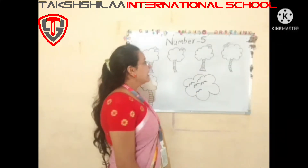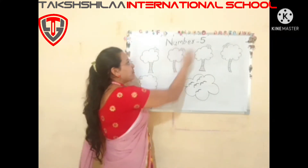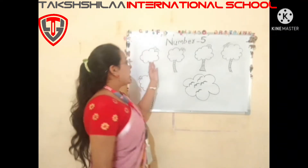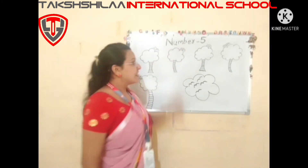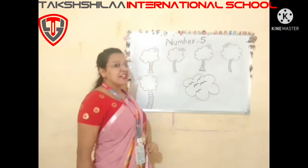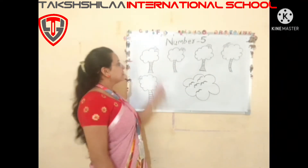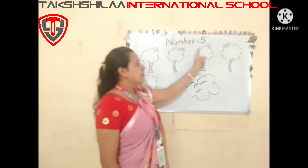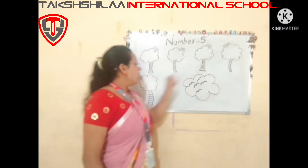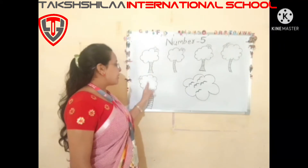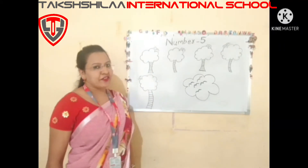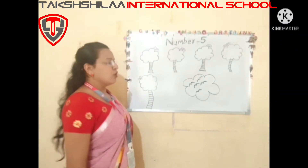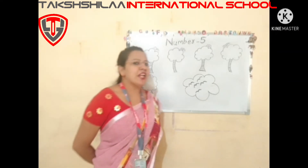You can see the board. We have 5 small trees. Let's count: 1, 2, 3, 4, and last number 5. Do you know how to write number 5?